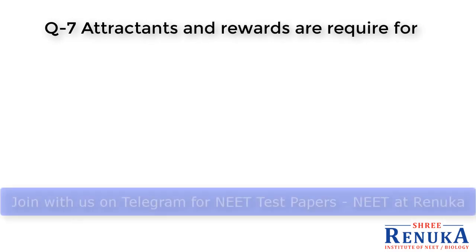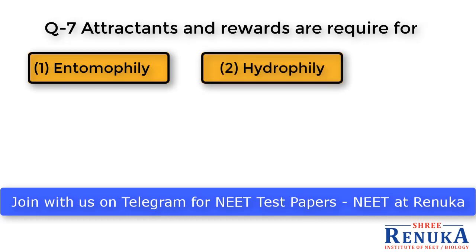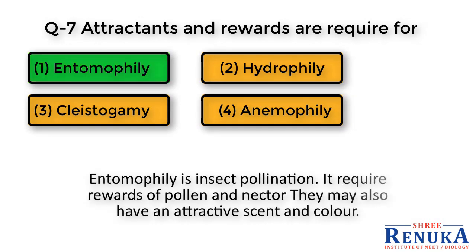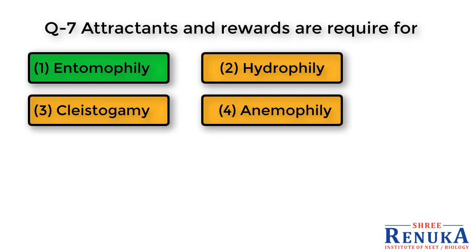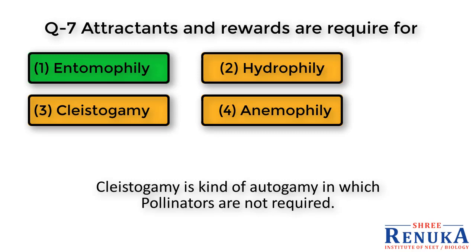Question 7: Attractants and rewards are required for — options: 1. Entomophily, 2. Hydrophily, 3. Cleistogamy, 4. Anemophily. The answer is 1, entomophily. Entomophily is insect pollination; it requires rewards of pollen and nectar, and flowers may also have attractive scent and color. In hydrophily, water pollination, no biotic agent is required. In anemophily, wind pollination, no vector is required. In cleistogamy, a type of autogamy, pollinators are not required. So whenever pollinators are required, attractants and rewards are necessary — making entomophily the answer.